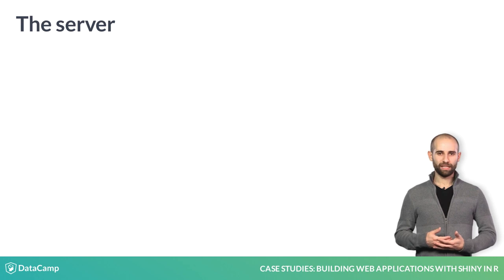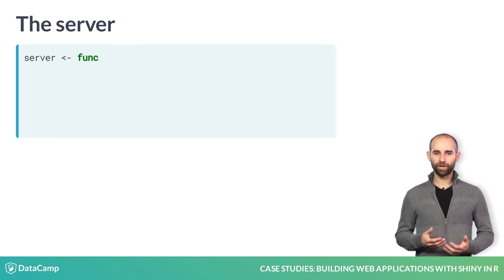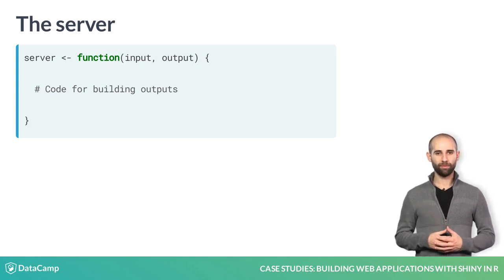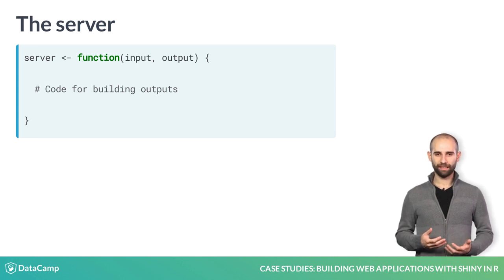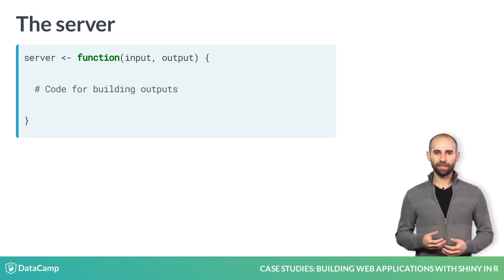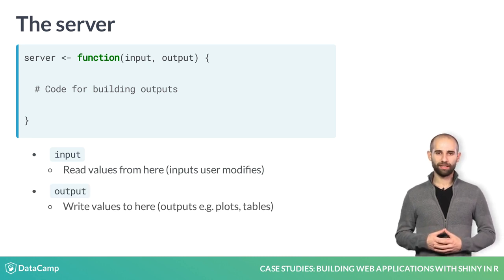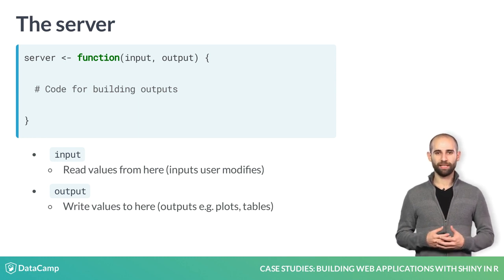The second step is to actually write the R code for the plot, and this is done in the server. Recall that the server of a Shiny app is a function with two parameters: input and output. You can think of both of them as lists — input is a list you will read values from, and output is a list you will write values to, specifically the outputs themselves.